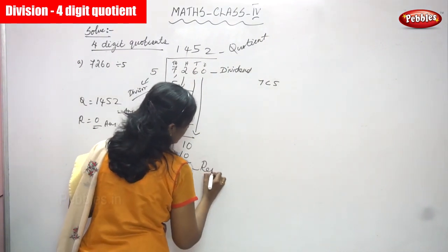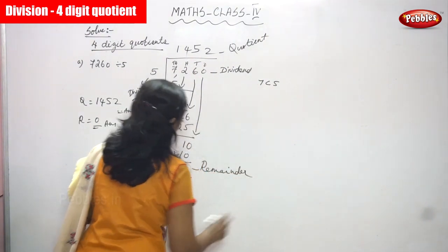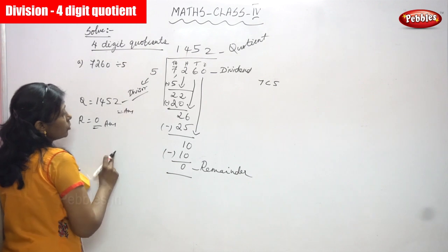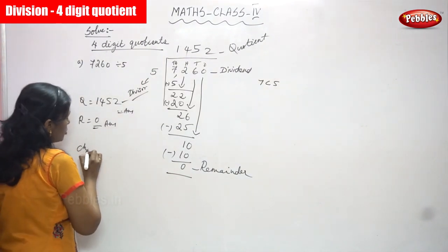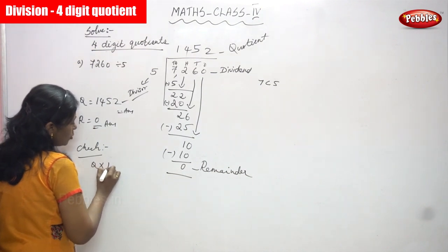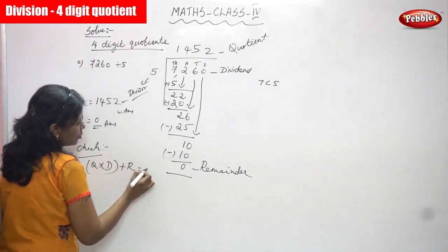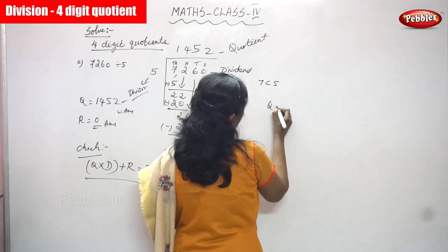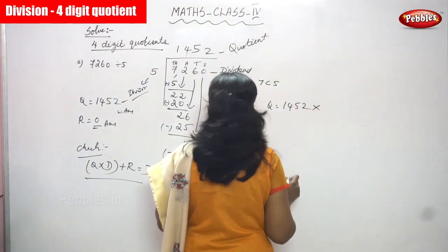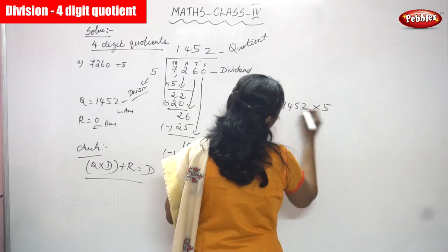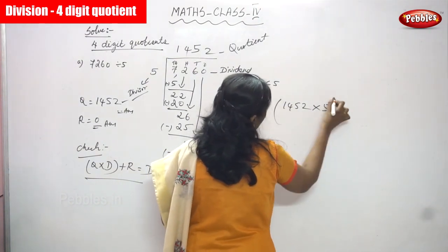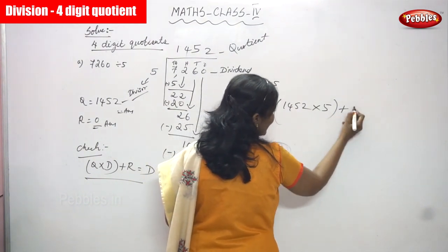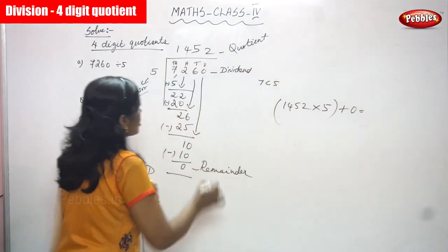And this is the remainder. Now you can solve the problem — this is the right answer. After that, you apply the check method. How do you do the check method? Quotient multiplied by divisor plus remainder gives you the dividend. That is the formula. So quotient is 1452, multiplied by divisor which is 5. The remainder is 0. You multiply 1452 by 5, then add the remainder to get the dividend.